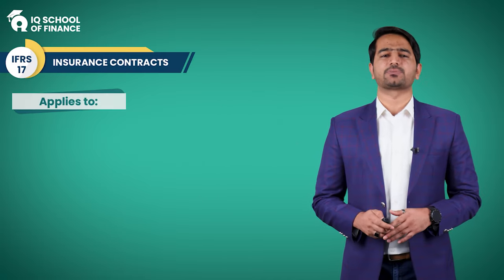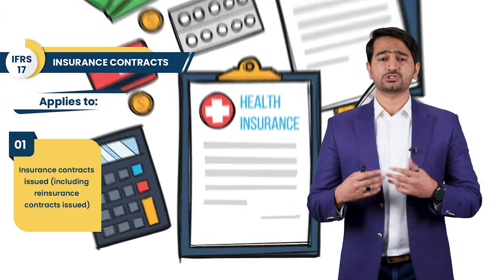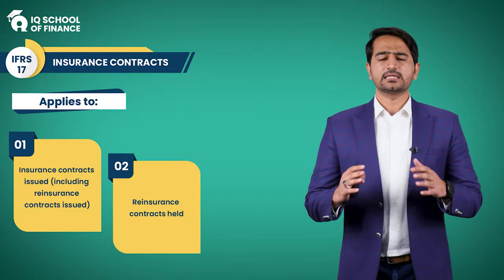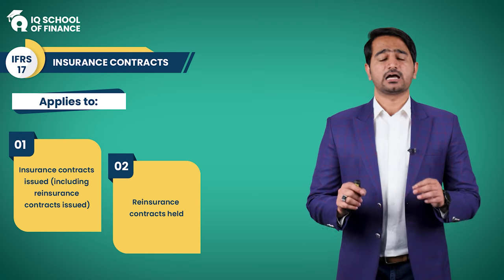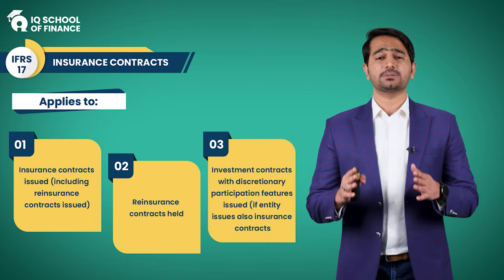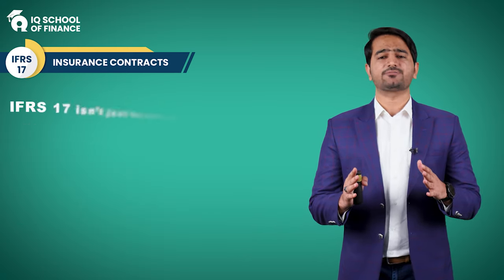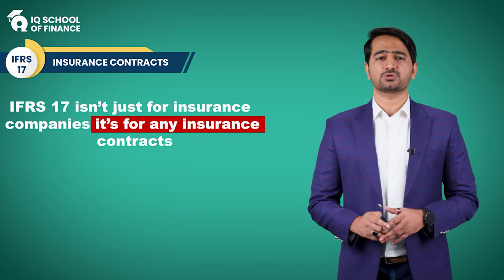Now let's see which types of contracts require IFRS 17. It applies to all insurance contracts issued, including reinsurance contracts issued and reinsurance contracts held. Think of reinsurance as insurance for insurance itself. IFRS 17 also applies to investment contracts with discretionary participation features if the company also issues insurance contracts. Importantly, IFRS 17 is not just for insurance companies — it applies to any entity with an insurance contract.